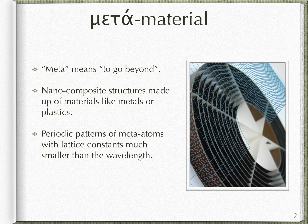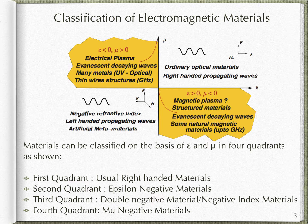Materials can be classified on the basis of electric permittivity epsilon and magnetic permeability mu in four quadrants as shown. In the first quadrant where both epsilon and mu are positive, it represents right-handed material. Electric vector E, magnetic vector H, and wave vector K form the right-handed triad as shown in the figure.